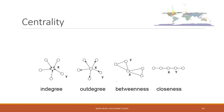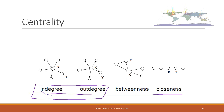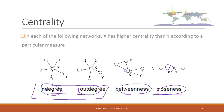To sum up, in all four scenarios we talked about degree — and depending on the type of network, it can be in-degree and out-degree — which is how many connections you have, meaning how many immediate neighbors you have. Betweenness and closeness look at the entire graph: how important you can serve as a brokerage, and how easy you can access the other members in your network. In all those networks, X has higher centrality than Y according to these different measures.